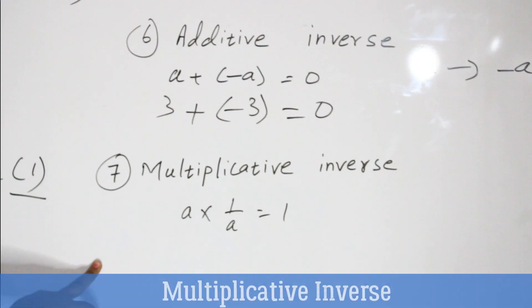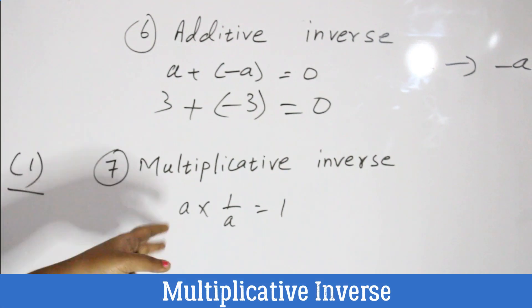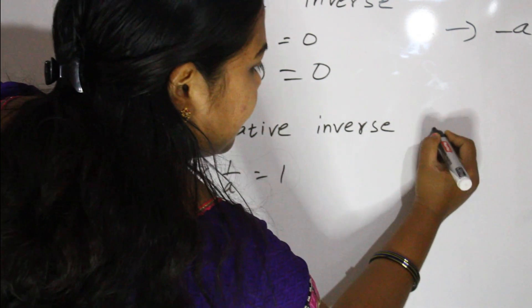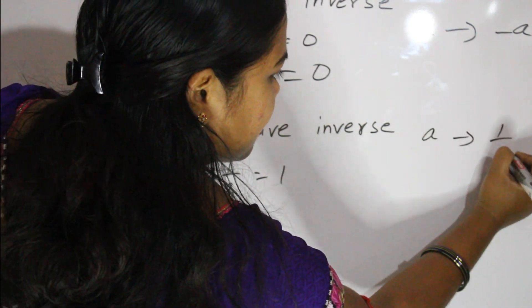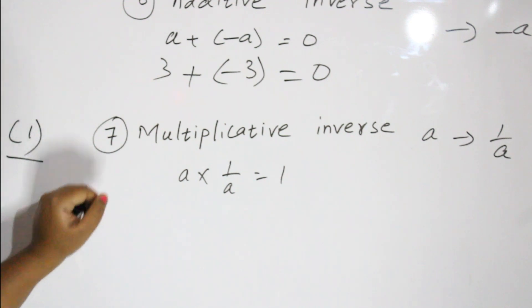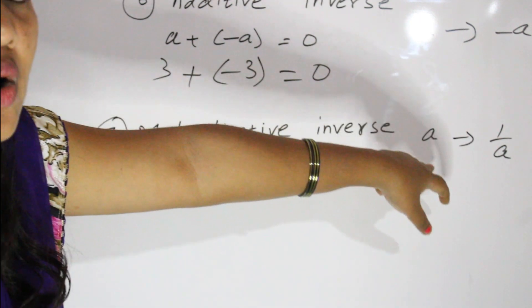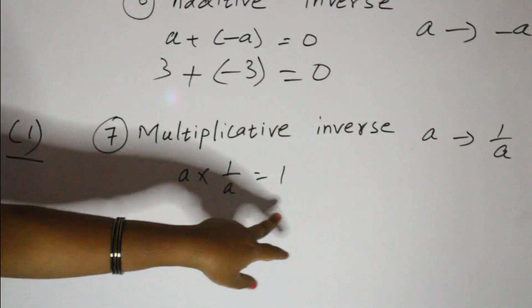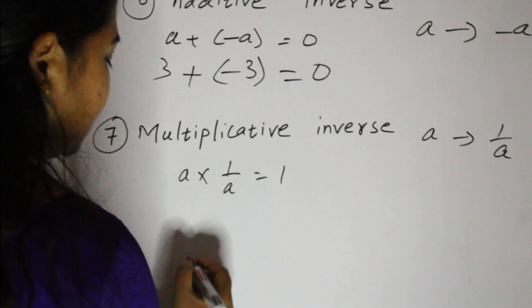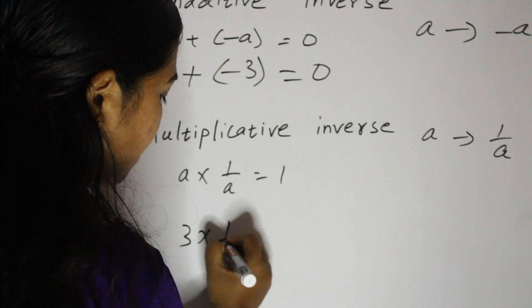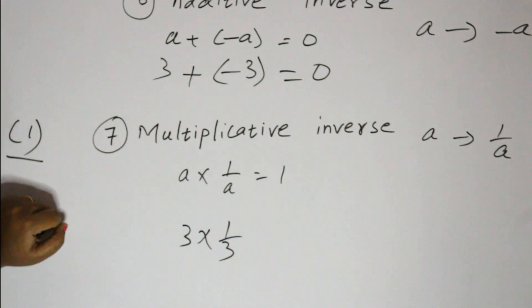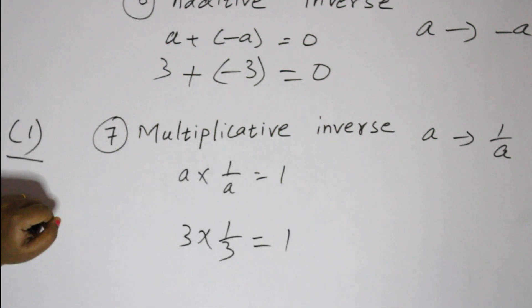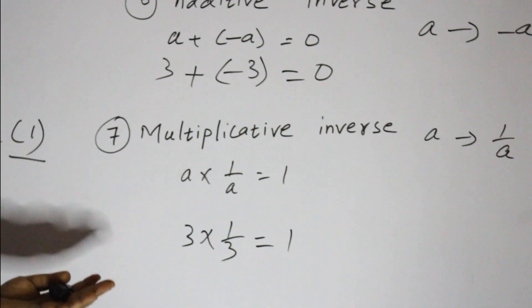Next is multiplicative inverse. When we multiply a number with its multiplicative inverse, we get one. For a number A, its multiplicative inverse is one by A. For example, the multiplicative inverse of three is one by three — when we multiply three by one by three, we always get one. So these are the properties of integers.